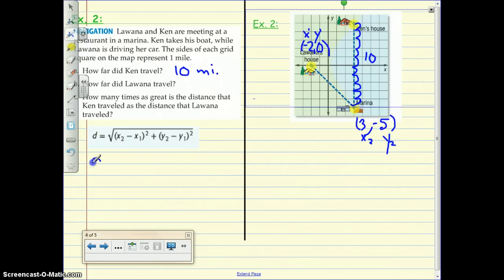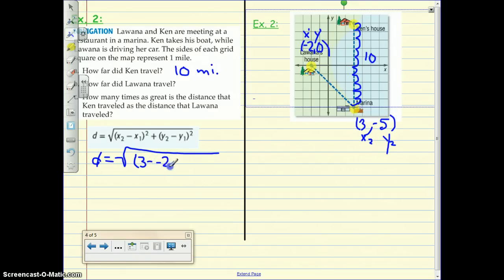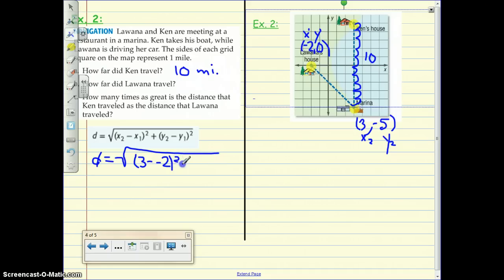All right, so now I can use the distance formula. D equals x2 minus x1 squared. So 3 minus, think ahead of me. Do you know what people are going to do wrong here? 3 minus negative 2. Did you get both of those negatives in there?